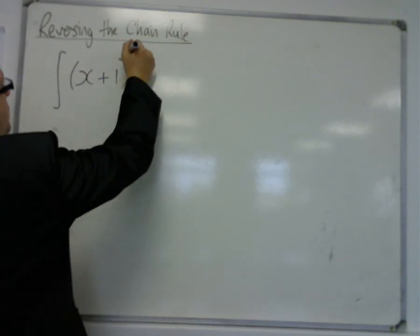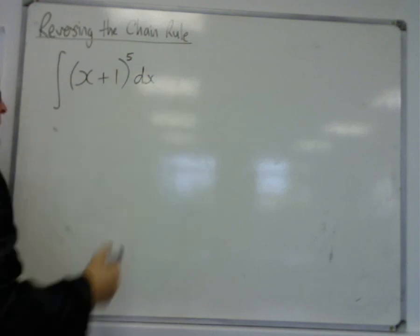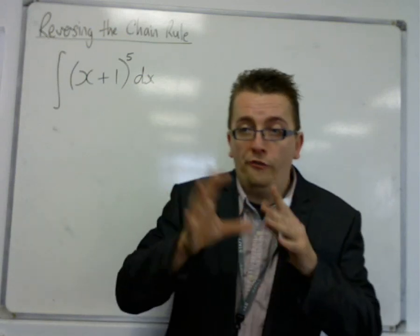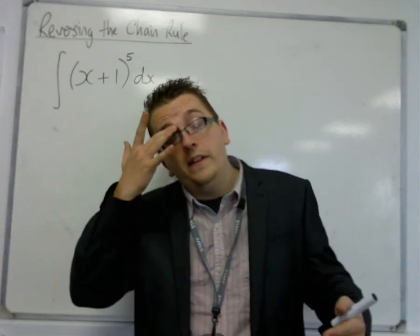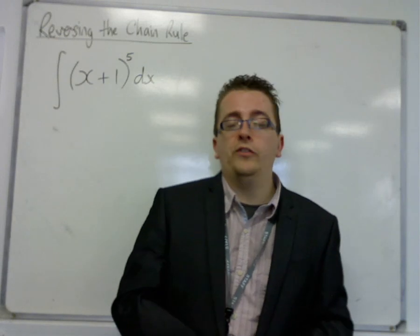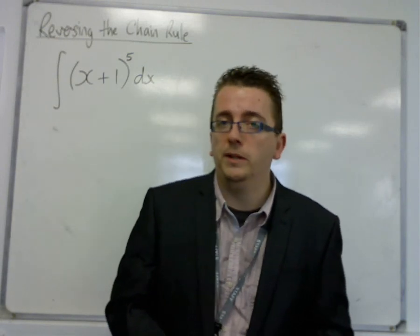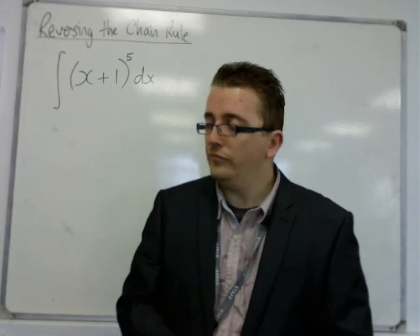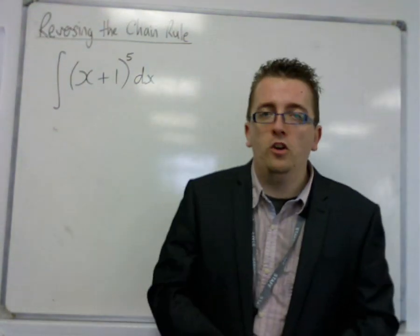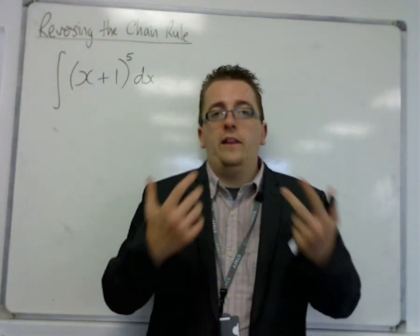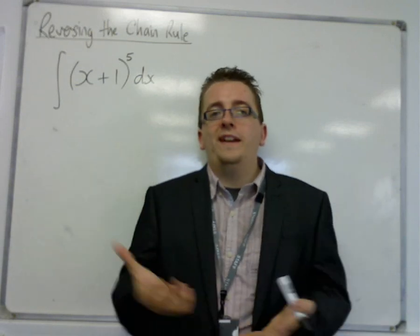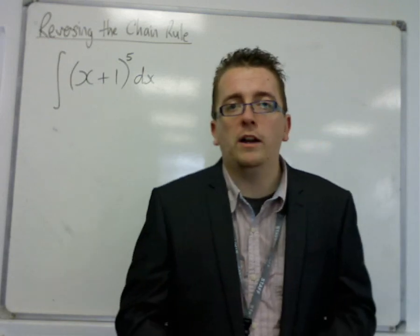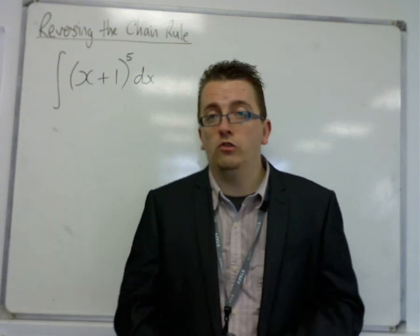Let's start with something nice and basic, like the integral of (x + 1) to the 5 dx. Now, you could potentially multiply out 5 separate brackets and then integrate each term, but because there are so many brackets and so many terms, there is a great possibility that you're going to go wrong somewhere. Obviously with this example you could use binomial expansion, but that isn't the point. The point is that we can use the chain rule backwards in order to integrate this function.